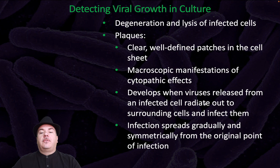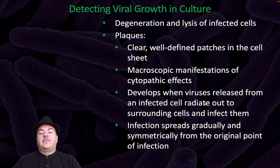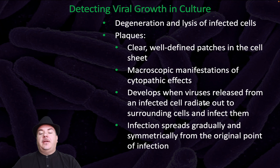How do we detect viral growth in a culture? Degeneration and lysis of infected cells results in plaques — these are clear, well-defined patches in the cell sheet. They are macroscopic manifestations of cytopathic effects. Plaques develop when viruses released from an infected cell radiate out to surrounding cells and infect them. Infection spreads gradually and symmetrically from the original point of infection.